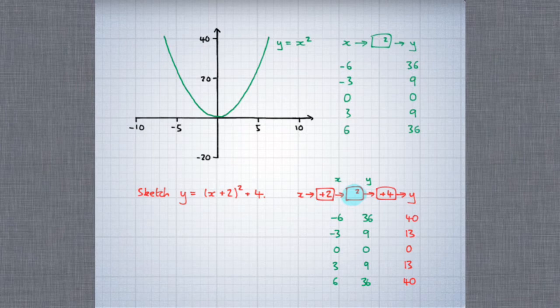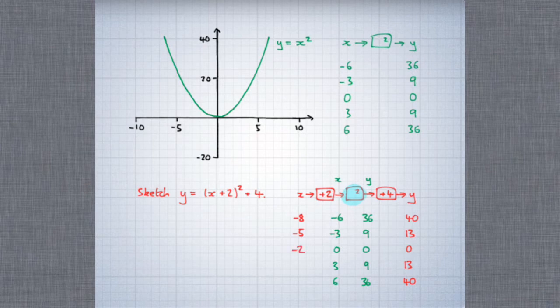The x-coordinates also need to change, and they need to be 2 less than they were before. So where before we had minus 6, here we've got minus 8. Where before we had minus 3, here we've got minus 5, and so on. They all need to be 2 less than they were before, so that when we add on 2, we get the numbers that are the input to the square function.